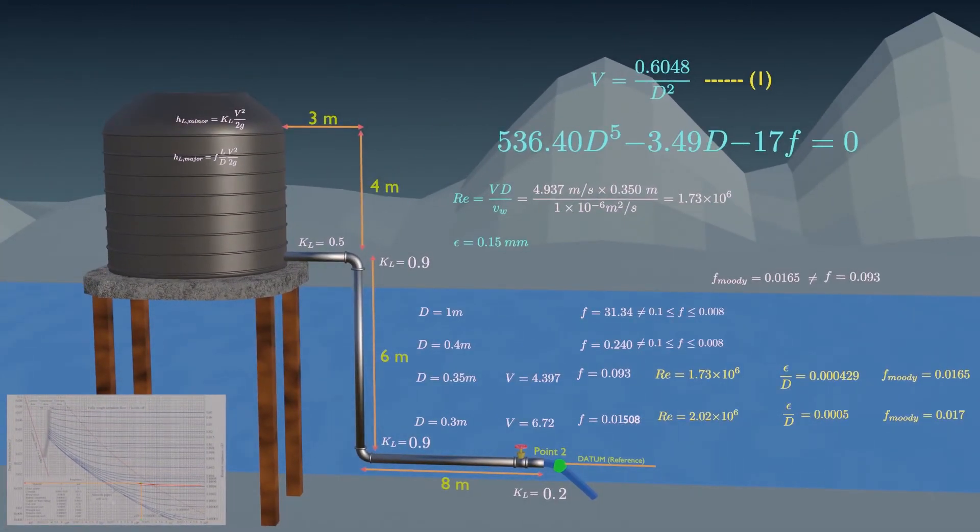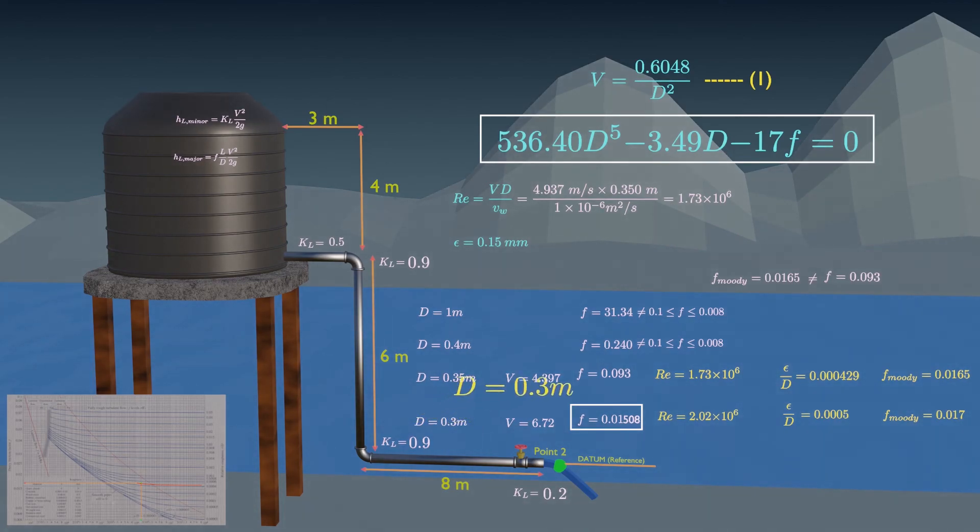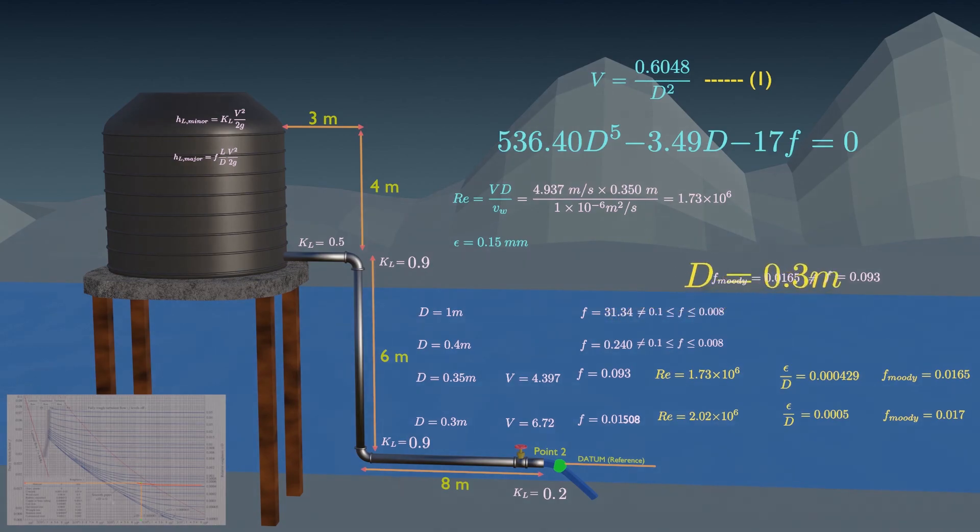With these new values from the Moody diagram, which is fairly close to the previous value obtained from the previous equation. Therefore, we will use diameter as 300 millimeters.